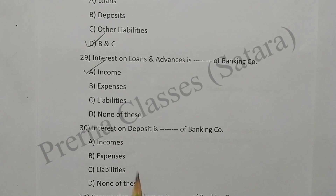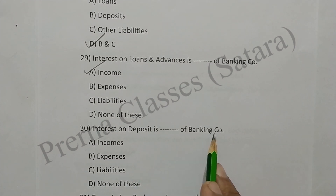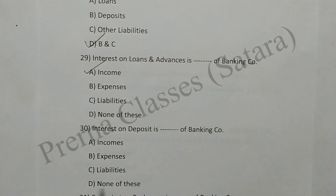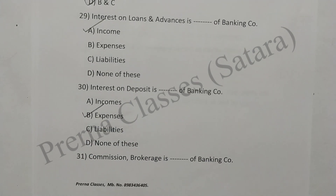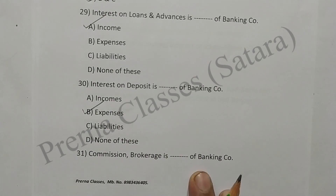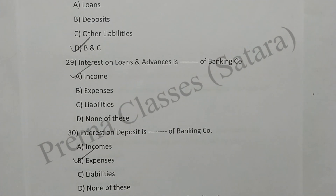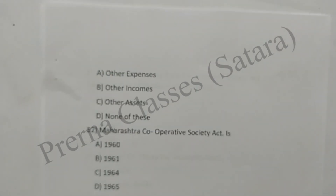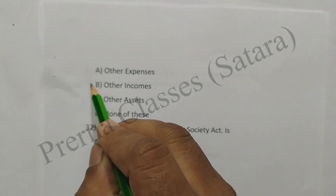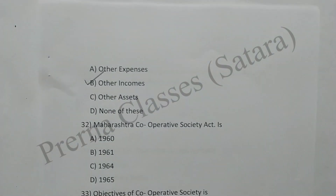Question 30: Interest on deposits is an expense of the banking company. Option B is correct. Question 31: Commission and brokerage of a banking company is other income. Option B is correct.